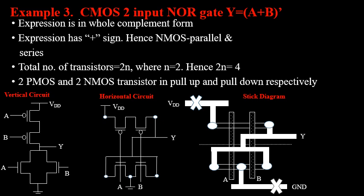Since the expression has a plus sign, NMOS should be connected in parallel and PMOS connected in series. Two PMOS transistors have to be connected in series and two NMOS transistors connected in parallel. The total number of transistors required is twice the number of inputs — two inputs, so two times two equals four. Two transistors will be PMOS and two will be NMOS.